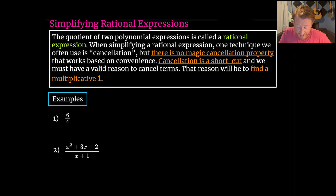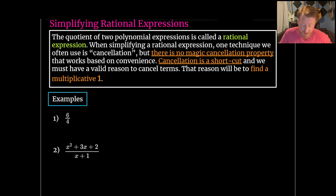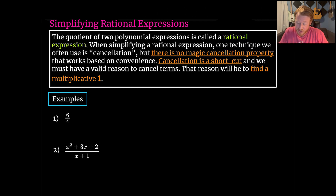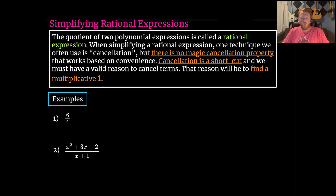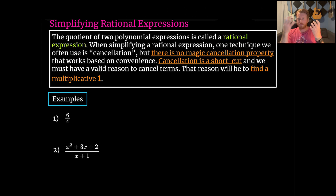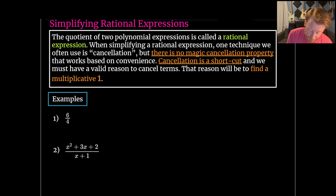But there is no magic cancellation property. Some students just think it would be convenient if two terms on the top and bottom canceled out — if there's one on top and one on bottom, surely you can just cross them out. Well, cancellation is just a shortcut. We have to have a valid reason to cancel terms. We need to find a multiplicative one — we need to be able to represent part of what we're doing as just a one that's being multiplied by everything else.